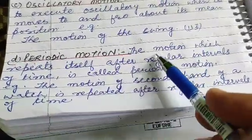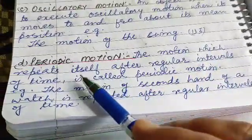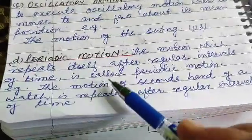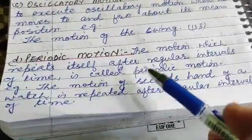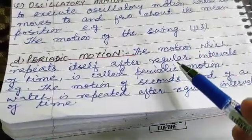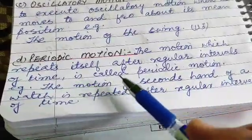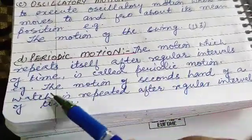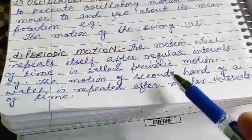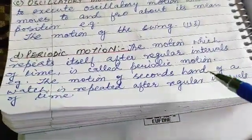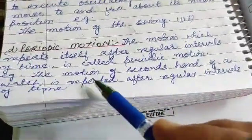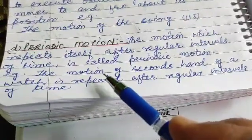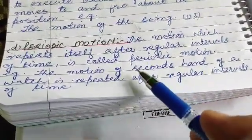Periodic motion: motion which repeats itself after a regular interval of time is called periodic motion. Example: the motion of the seconds hand of a watch — it repeats after regular intervals.